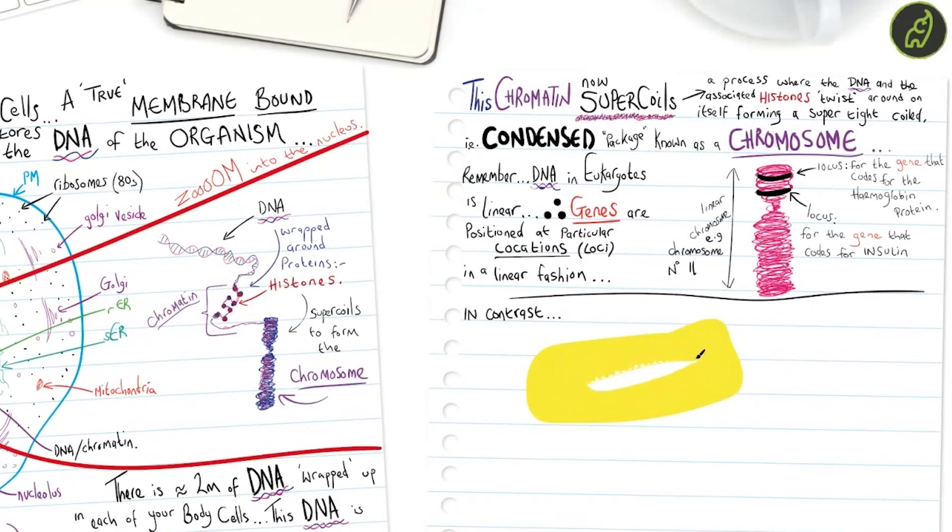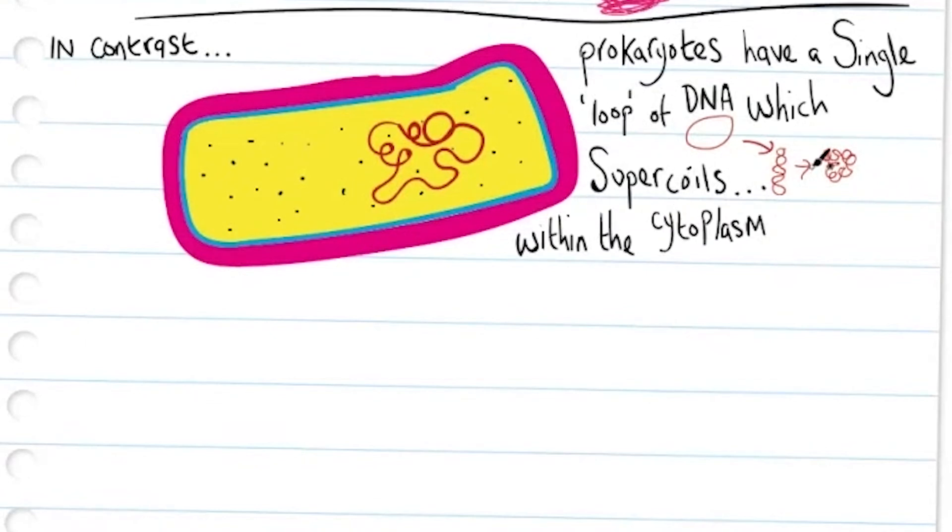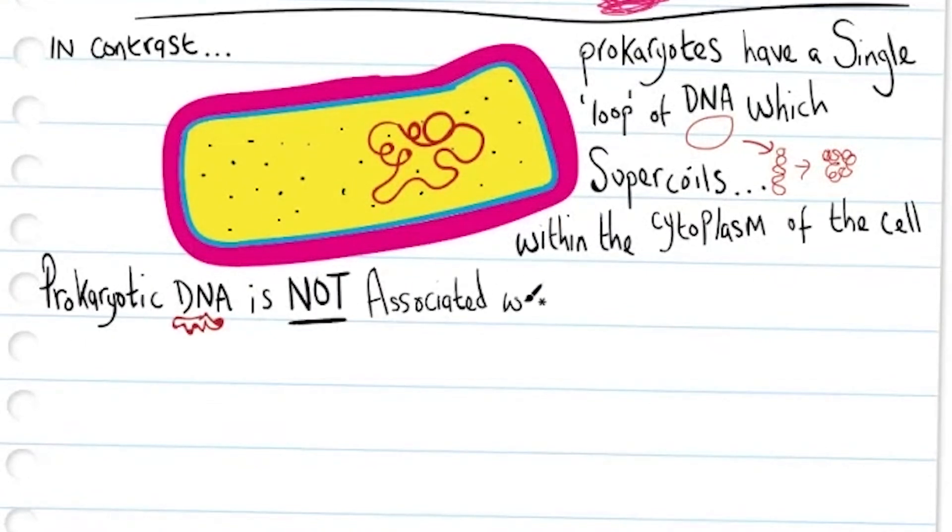In contrast, prokaryotic cells—bacteria, I'm drawing here—prokaryotes have a single loop of DNA which super coils, twists and coils within itself within the cytoplasm of the cell. Remember, prokaryotic DNA is not associated with proteins.